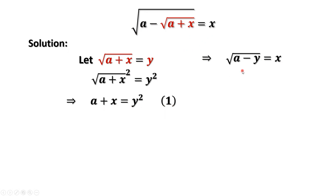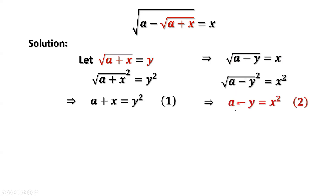We take squares on both sides of this equation. Then we have a minus y equals x squared.